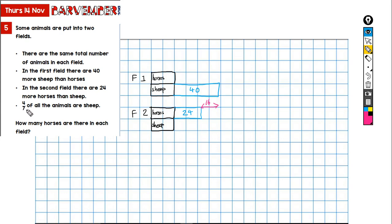Well because I'm given some information here. I'm told that four-sevenths of all the animals are sheep, so if four-sevenths are sheep then three-sevenths must be horses. All right, and the difference is one-seventh, which, and the difference here in animals is 16. So that's quite important.